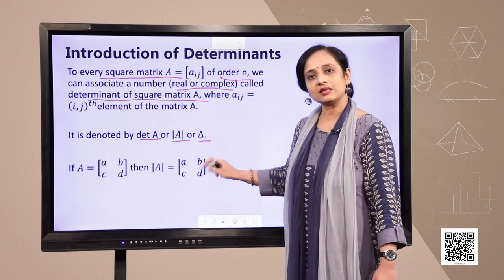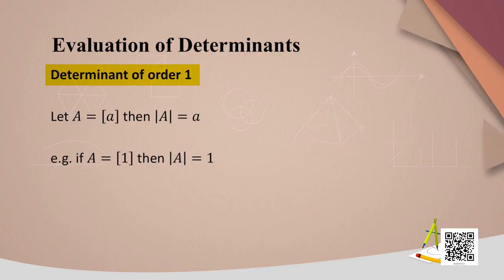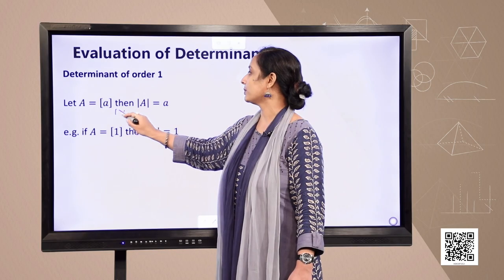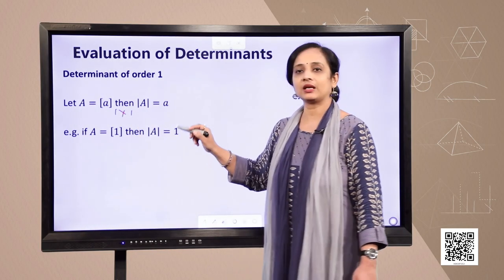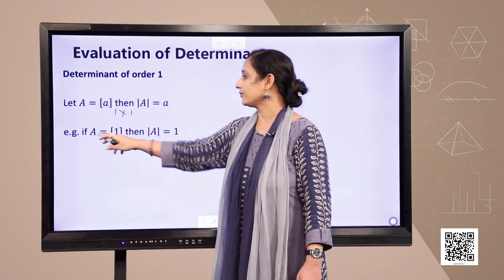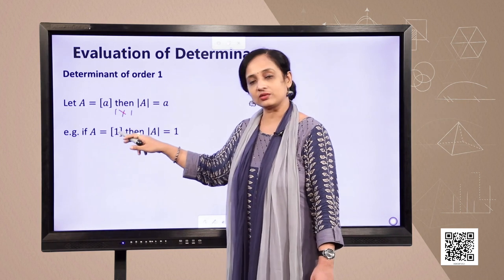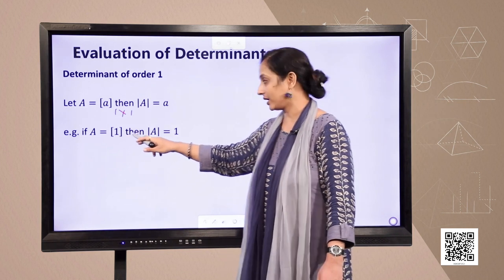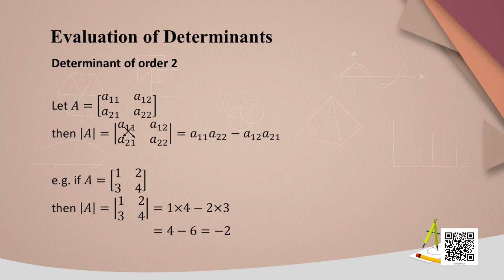For a determinant of order 1, let A be a matrix of order 1×1. Then det(A) is simply the number A itself. For example, if matrix A consists of the single element a1, then its determinant is a1.